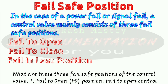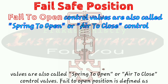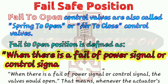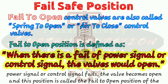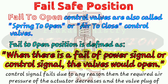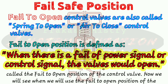The first fail-safe position is fail to open. Fail to open control valves are also called spring-to-open or air-to-close control valves. Fail to open position is defined as when there is a failure of the power signal or control signal, the valve would open. Whenever the actuator's power signal or control signal fails, the valve becomes open, and this position is called the fail to open position. Such control valves require air pressure to keep the valve closed. When the power or control signal fails, the required air pressure decreases and the valve plug moves toward the open position due to the actuator spring.